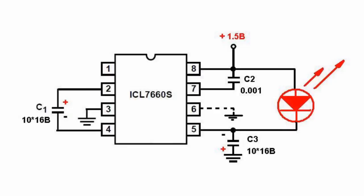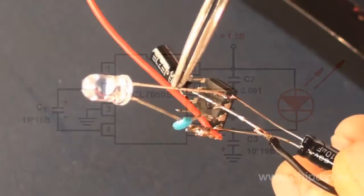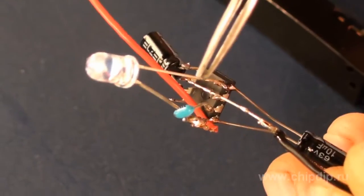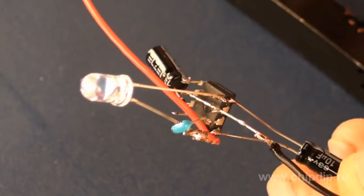The external capacitor C2, installed on the output of the generator frequency control, serves to change the time of accumulation and distribution of the charge.